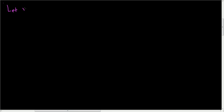This is just a quick video to talk about what a derivative is. For notation, we're going to let y be equal to f of x. The goal is to find the slope of this function at x. You might say, well, that doesn't make any sense — it's just a function, how can you find the slope of a function?